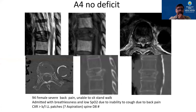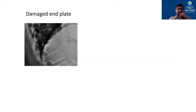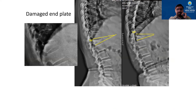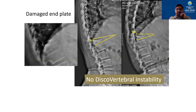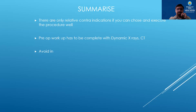Let's look at some examples. The first was an A4 fracture with posterior wall involvement, but because this was at the D8 level — a relatively stable level — we did a vertebroplasty, and at one year follow-up the patient is doing well. Another case showed a superior end plate fracture with the lower end plate also partially dipped but not frankly fractured. There was no significant angular kyphosis and no disco-vertebral instability, so we did a vertebroplasty and had good results. Thank you.